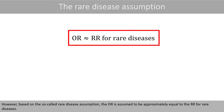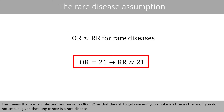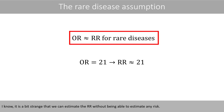However, based on the so-called rare disease assumption, the odds ratio is assumed to be approximately equal to the relative risk for rare diseases. This means that we can interpret our previous odds ratio of 21 as: the risk to get cancer if you smoke is 21 times the risk if you do not smoke, given that lung cancer is a rare disease. It sounds a bit strange that we can estimate the relative risk without being able to estimate any risk.